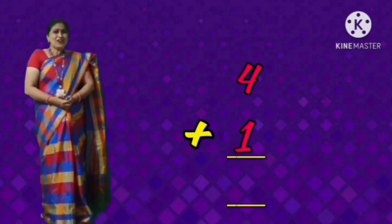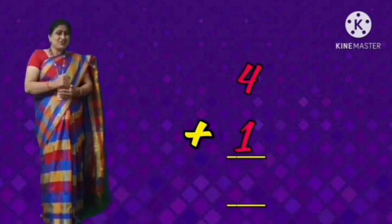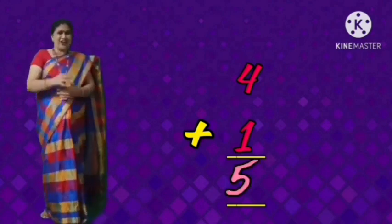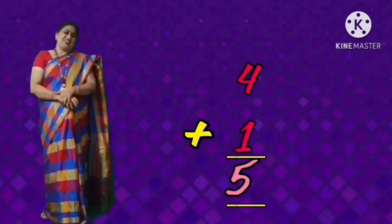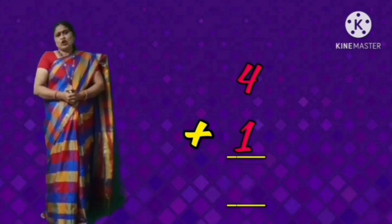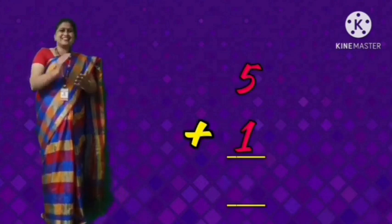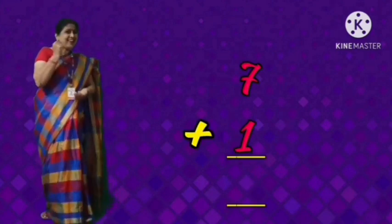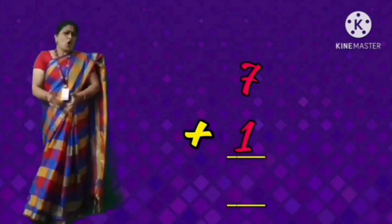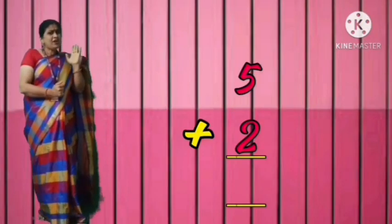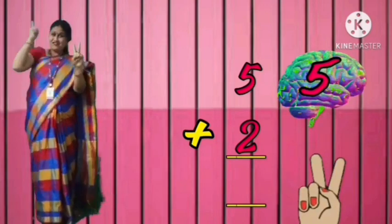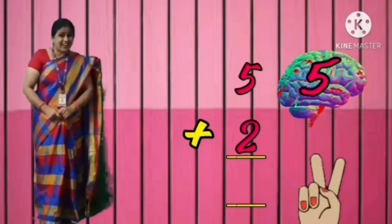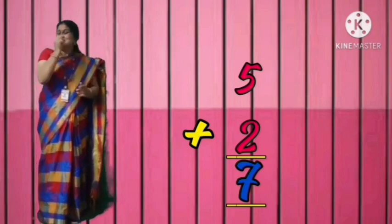Now, 4 plus 1. Do you all remember the after-number concept, children? 4 plus 1 is 5. 4 in the mind, 1 in the finger. After 4? 5. 5 plus 1? 6. 7 plus 1? 8. Very good. Simple addition: 5 plus 2. 5 in the mind, 2 in the finger. After 5? 6, 7. 5 plus 2 is equal to 7.